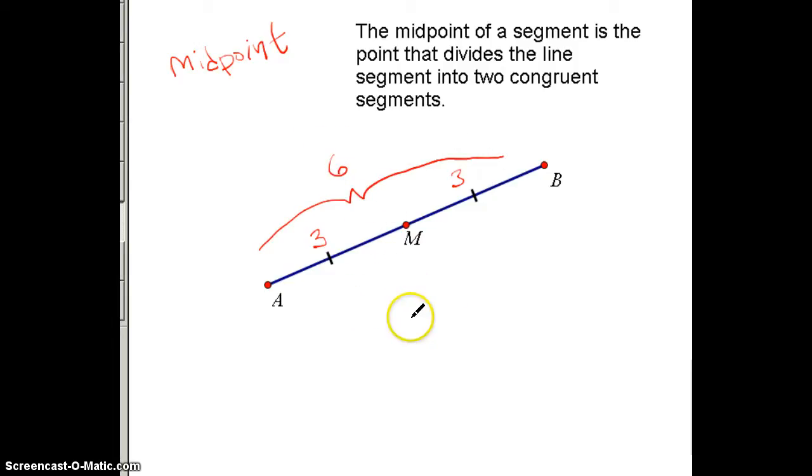So the first statement that we could write, we could actually write if we know that M is the midpoint, then we know that AM, the segment, is congruent to, remember the congruent symbol, is congruent to MB, the segment.